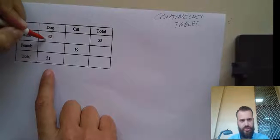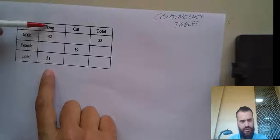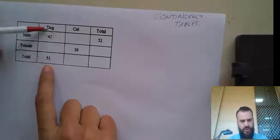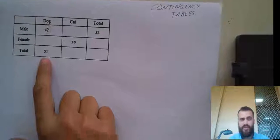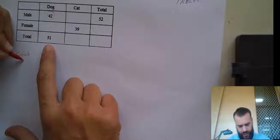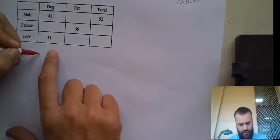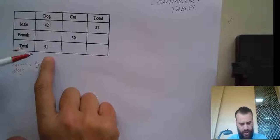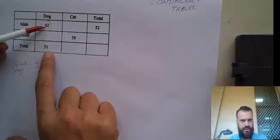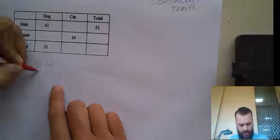There are 42 male dogs — that's what this says, male dogs. And there are 51 dogs in total. So the question is: how many female dogs are there? Well, female dogs are going to be equal to the total number of dogs, 51, minus the number of male dogs, 42. That's going to be 9.